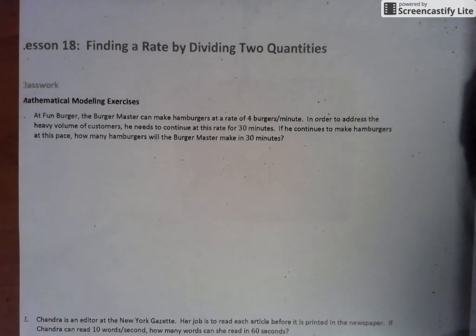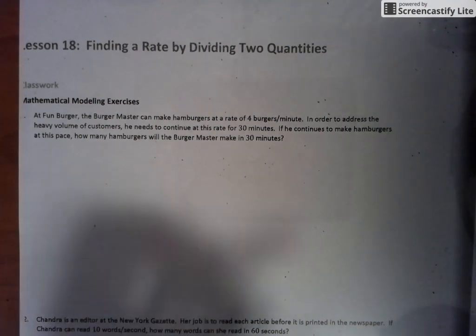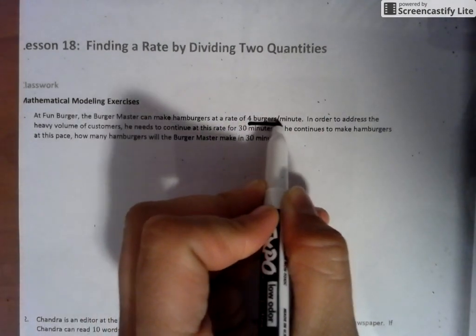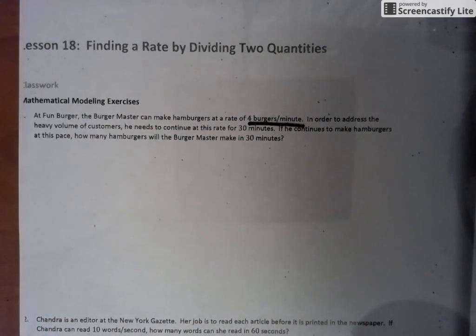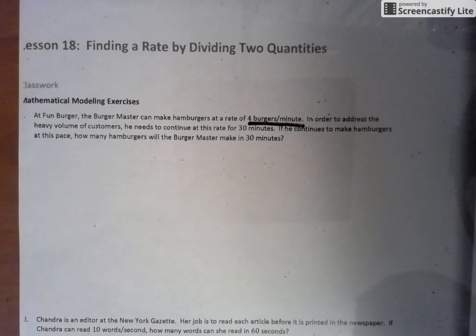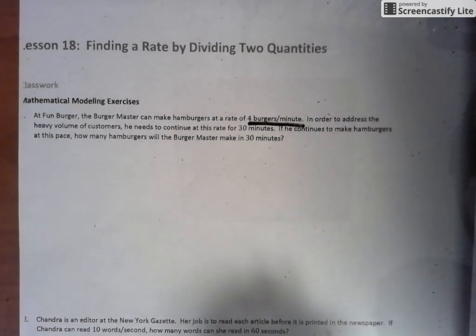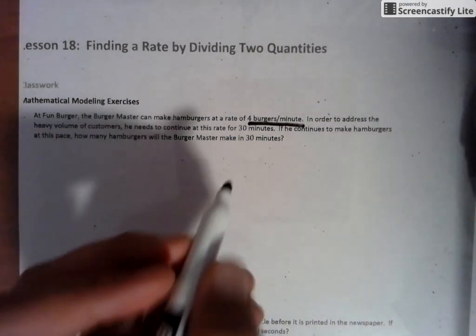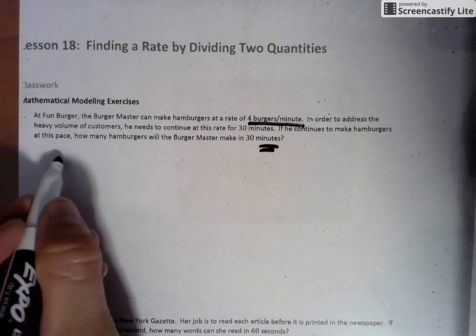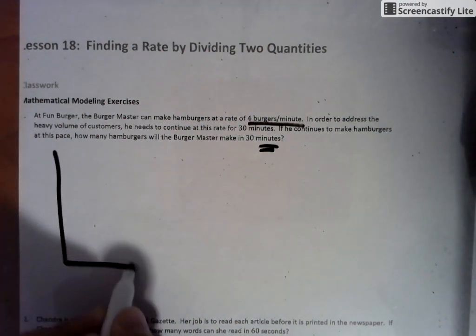So let's take a look at this first problem. At Fun Burger, the Burger Master can make hamburgers at a rate of four burgers a minute. There's your ratio right there, or your rate, I should say. In order to address the heavy volume of customers, he needs to continue at this rate for 30 minutes. If he continues to make burgers at this pace, how many hamburgers will the Burger Master make in 30 minutes?